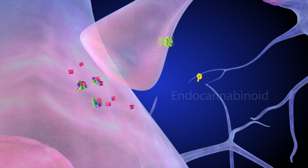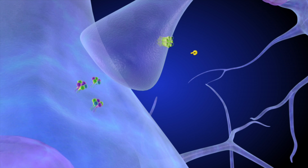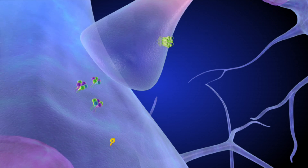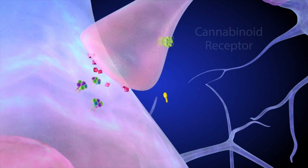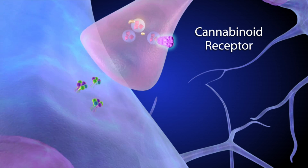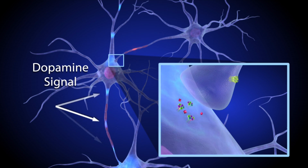Endocannabinoids are neurotransmitters that can indirectly affect dopamine signals by modifying the activity of other neurotransmitters such as GABA. Endocannabinoids, like dopamine, bind to specific receptor proteins located on the surface of some cells. Depending on its current level of activity, the presynaptic dopamine neuron can produce endocannabinoid molecules. These molecules bind to cannabinoid receptors on the adjacent GABA neuron, reducing the amount of GABA it releases. Inhibiting GABA neurons in this way boosts the dopamine signal in the reward synapse.